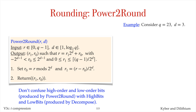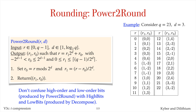Here is an example. Let's take q to be 23, a 5-bit integer, and d to be 3. Here are the outputs of Power to Round for all integers r between 0 and q minus 1. You can see that the low-order bits r0 take on values from minus 3 to 4, whereas the high-order bits r1 take on values from 0 to 3.